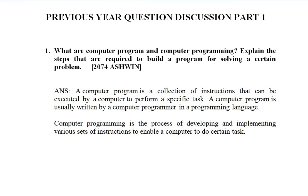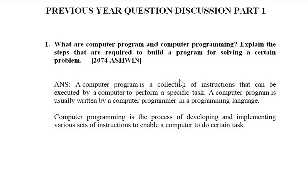The first question has been asked in 2074. The question is: what are computer program and computer programming? The second part is explain the steps required to build a program for solving a certain problem. This question might have been asked for 8 marks — 2 marks for the definition and 6 marks for the second part. Answer the questions accordingly.